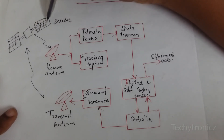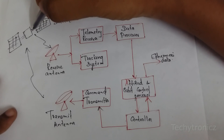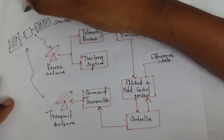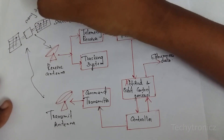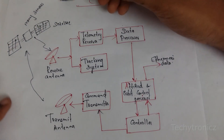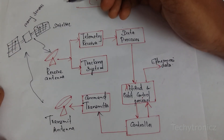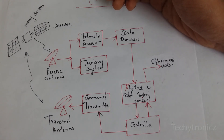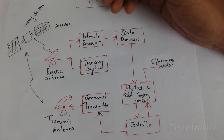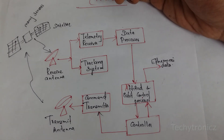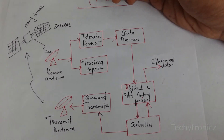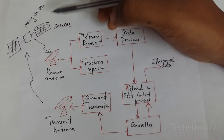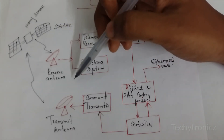This is the satellite — we all know this is the satellite with the solar panels. The satellite has many sensors which are used to collect information about different parameters. It may be voltage, current, or pressure in fuel tanks. It collects the various information and sends all of it to the earth station.